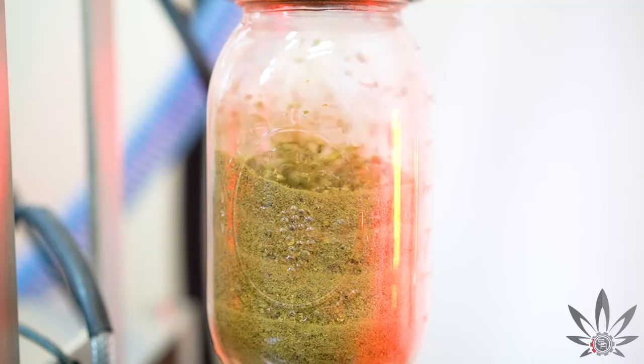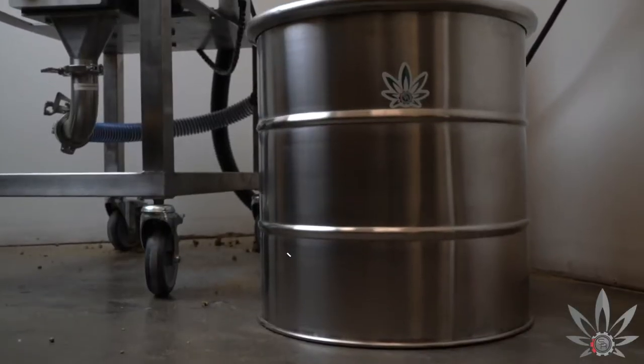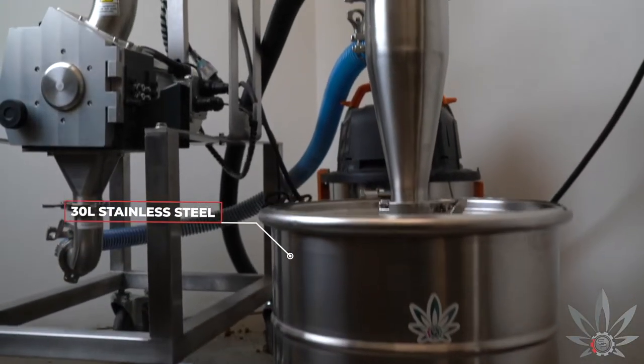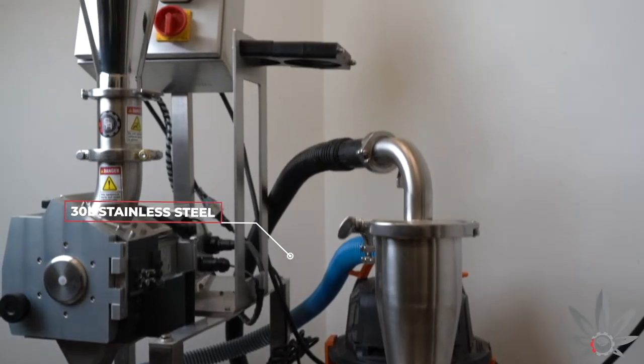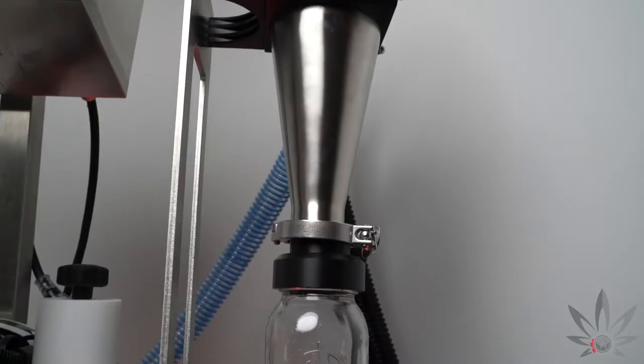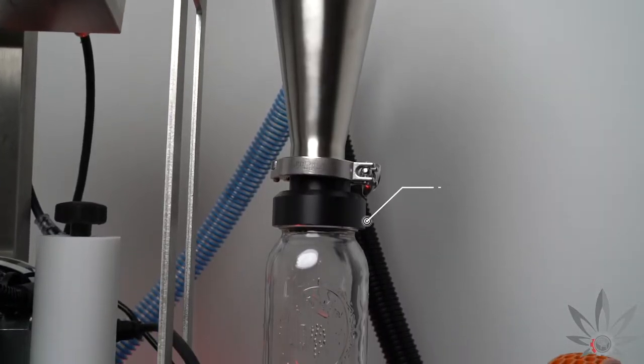Once it has passed through the cyclone, you can choose to collect the milled product in larger containers, such as this 30-liter stainless steel container, or in smaller containers like these classic ball jars, depending on your output needs.